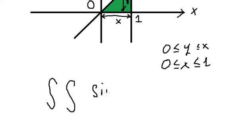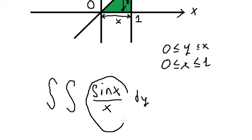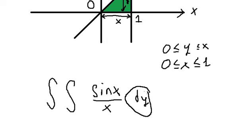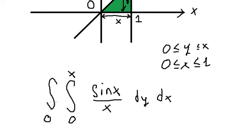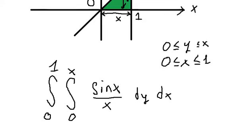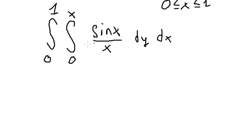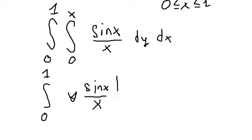We have sin(s) over s. We put dy first, because if we put ds first we cannot evaluate this interaction. That's why we need to use dy. So y goes from zero to s, and ds goes from zero to one. Now we need to calculate — we integrate with respect to dy because we don't have y in the integrand, so we get y times sin(s) over s, with boundary from zero to s, then ds.